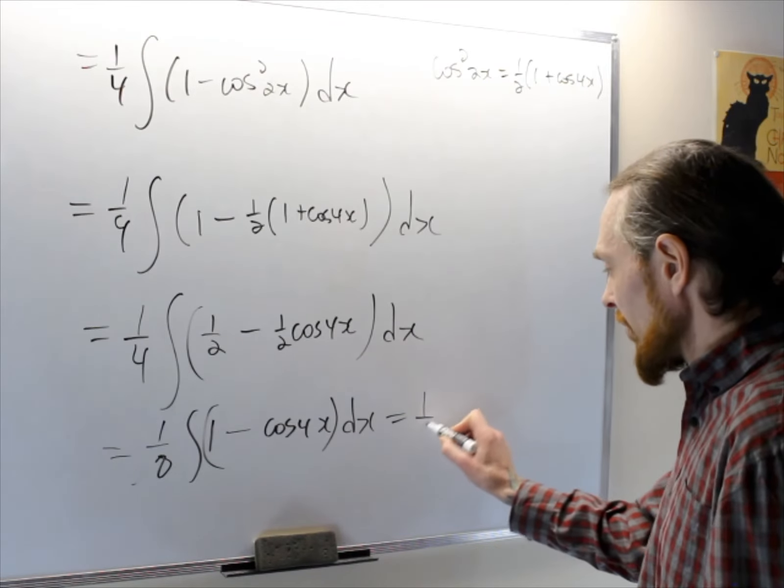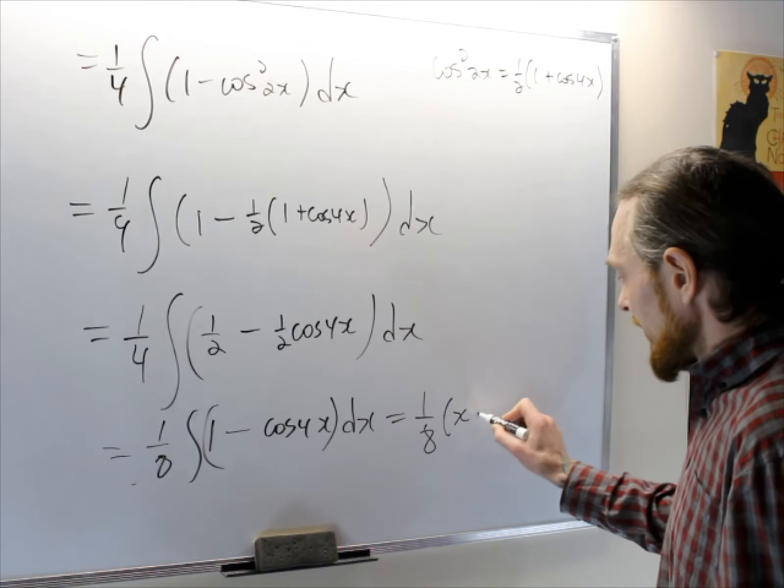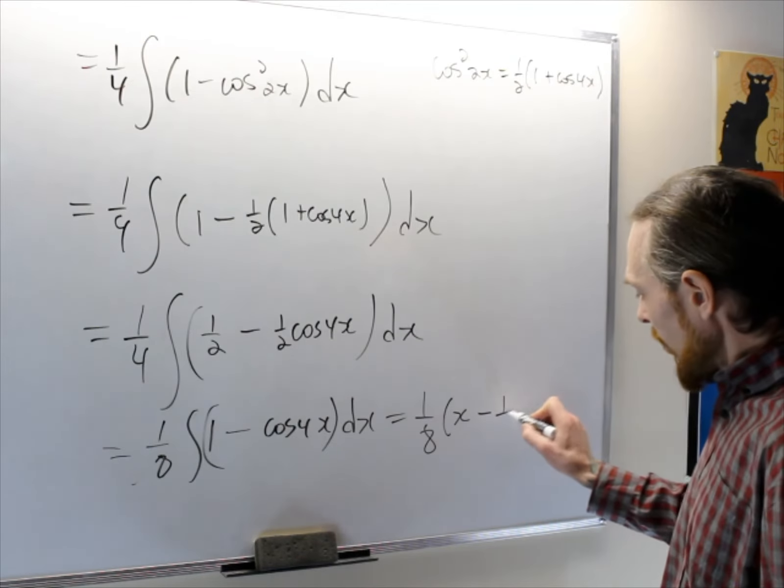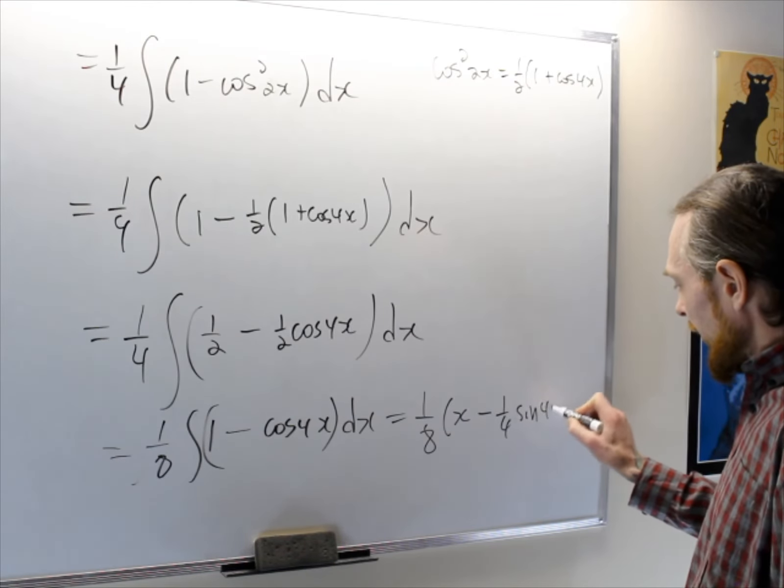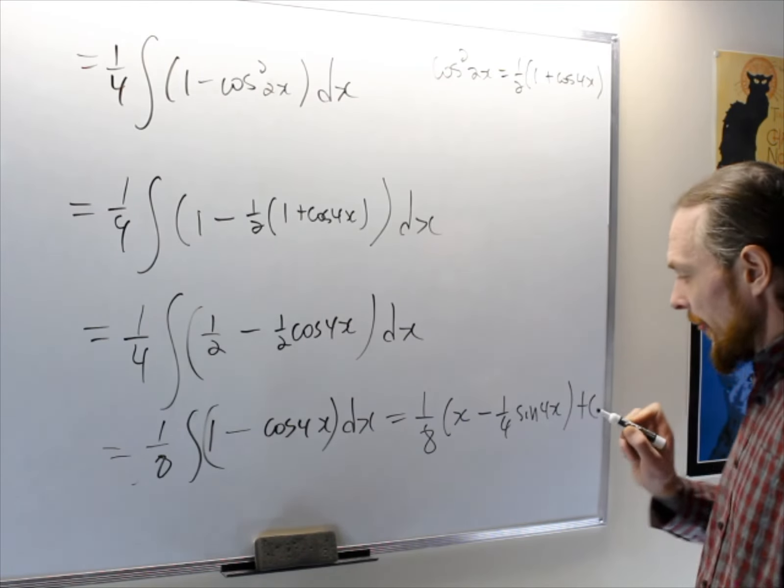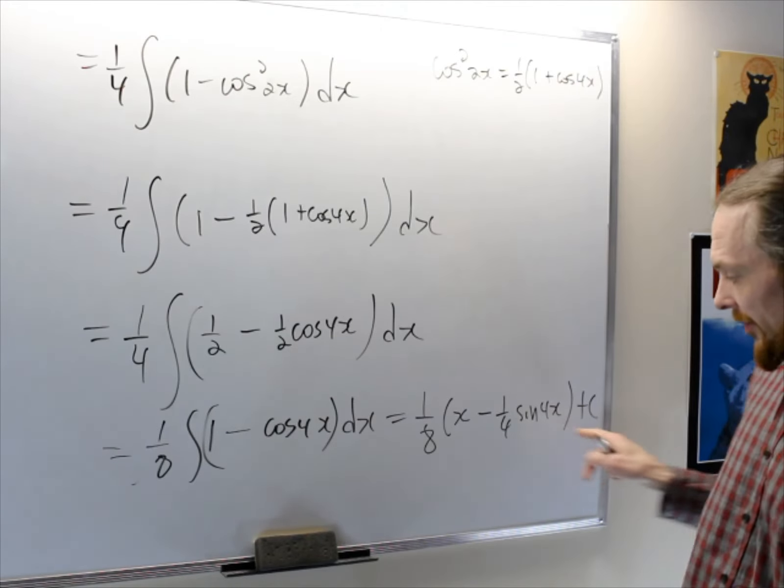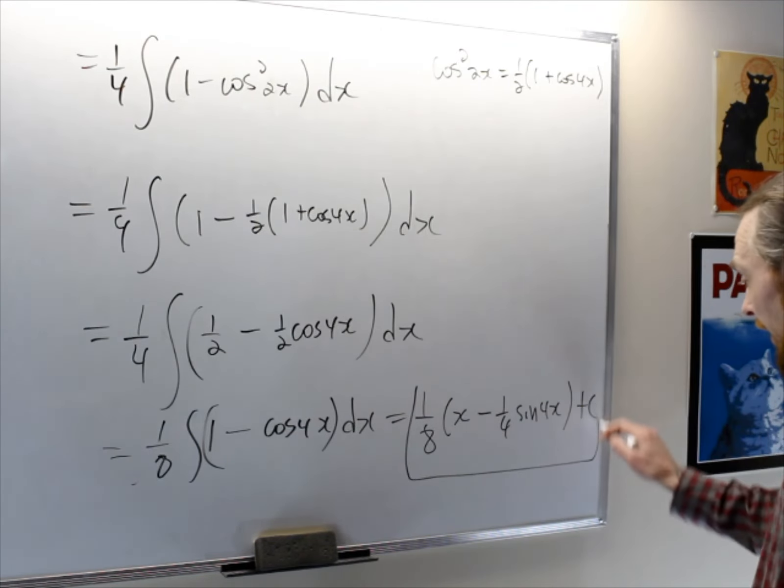And then, so now this integral is 1 over 8, x minus 1 fourth sine 4x plus c. And then you can distribute that back in if you want, but essentially, that's the main answer.